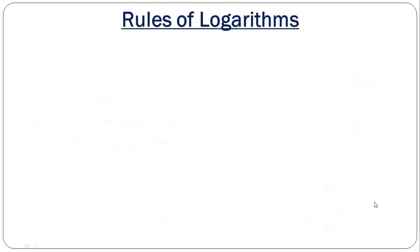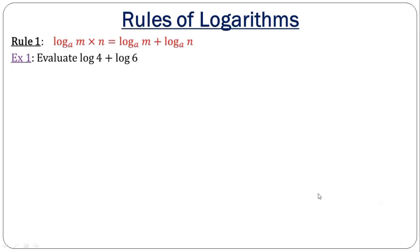Let's look at the rules of logarithms, beginning with the first one: the addition rule. It says that when we add two logarithms with the same base, that is the same thing as picking one of the logs and multiplying the numbers. This is just like the reverse of indices.